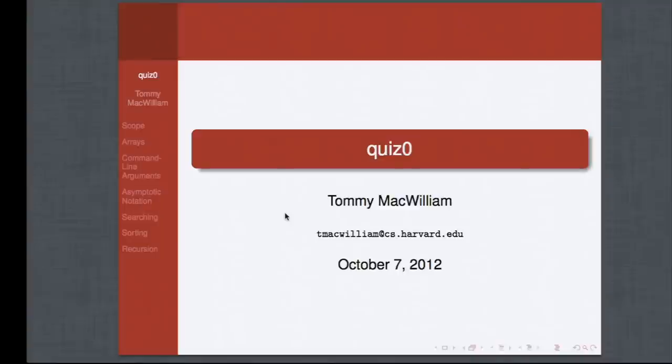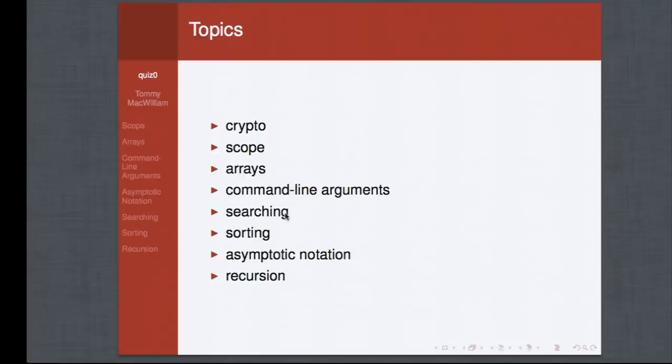That's Week 1 and 2. Now we move to Week 3 topics: crypto, scope, arrays, etc. For the quiz, know the difference between the Caesar cipher and the Vigenere cipher — how both work, and how to encrypt and decrypt with them. The Caesar cipher rotates each character by the same amount, modding by the number of letters in the alphabet. The Vigenere cipher rotates each character by a different amount depending on a keyword, where each letter in the keyword specifies a different rotation amount.